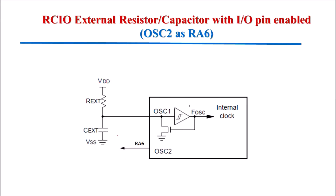The next option is RCIO — external resistor-capacitor — but here the difference is that the oscillator 2 pin can be used as an IO pin. Port A pin number 6 can be used as an IO pin, that is the oscillator 2 pin. Here frequency is not available at oscillator 2 pin; instead, this pin can be used as an IO pin. The same oscillator 1 pin is used to connect the external resistor and external capacitor. This RCIO oscillator will generate a frequency.